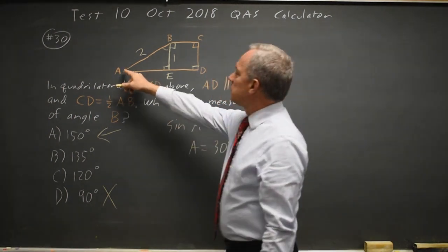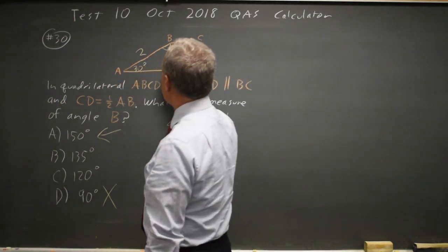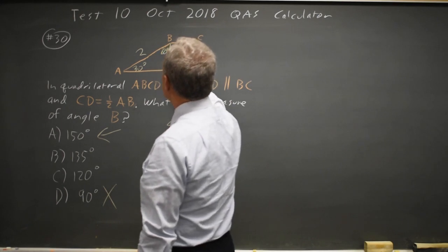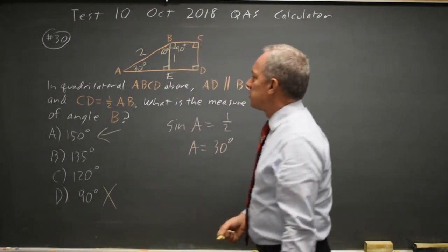Since we have a 30-degree angle here and a 90-degree angle here, this angle is 60 degrees plus another 90 degrees for the right angle on the other side of line BE.